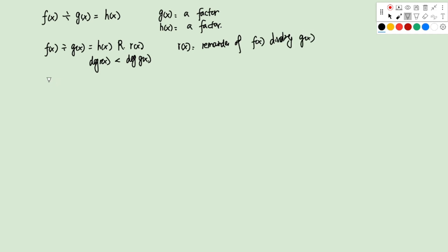Today we're going to look at a special case: when g is a linear polynomial, written as g equals ax plus b. The first theorem we're going to learn is called the Factor Theorem. It has several parts.